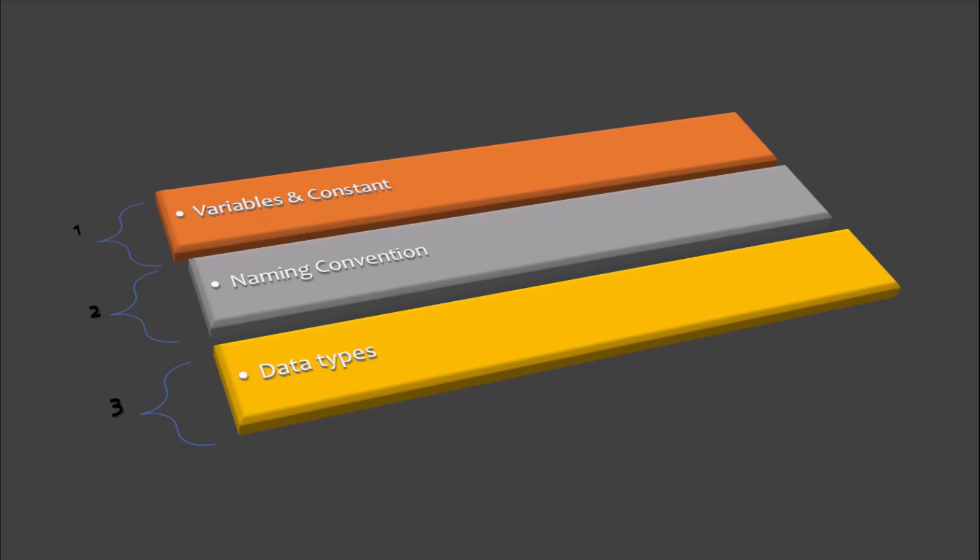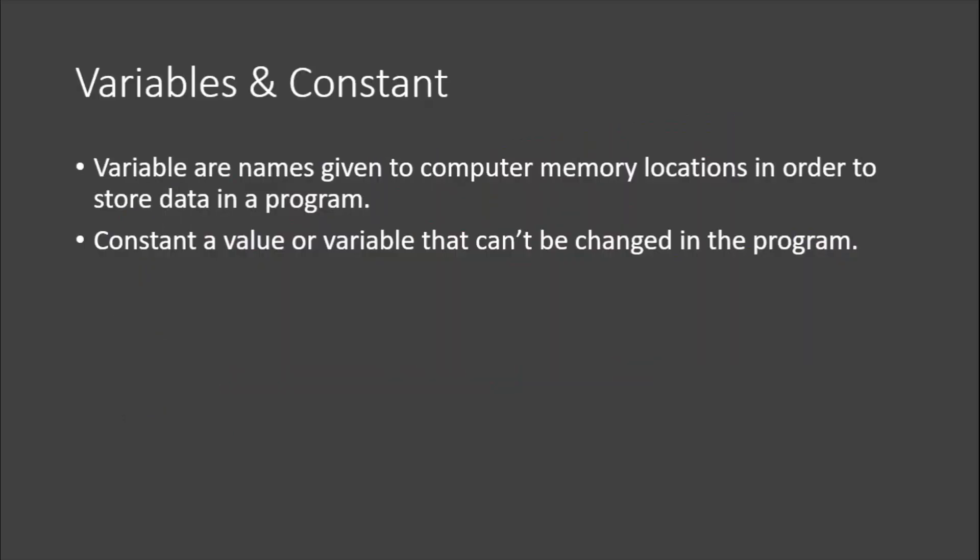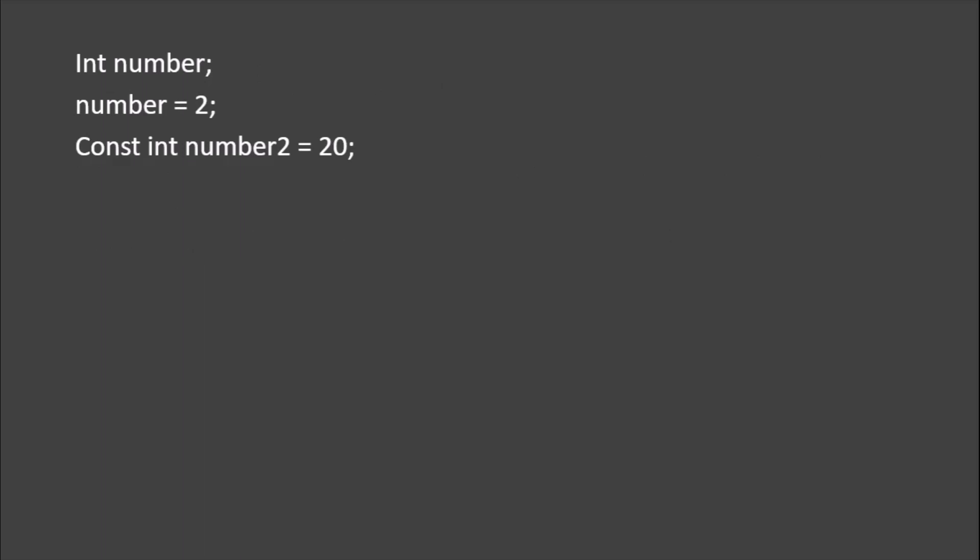A variable is simply a name given to a computer memory location in order to store data in a program. A constant is a special type of variable in which its value cannot be changed in a program. A good example is Pi, for example when you want to initialize Pi.